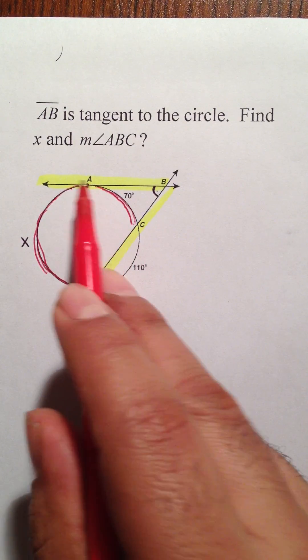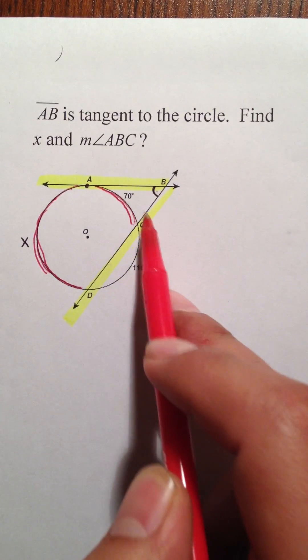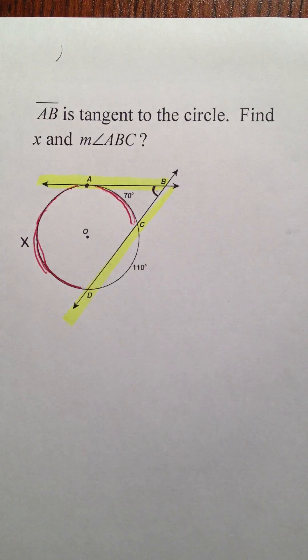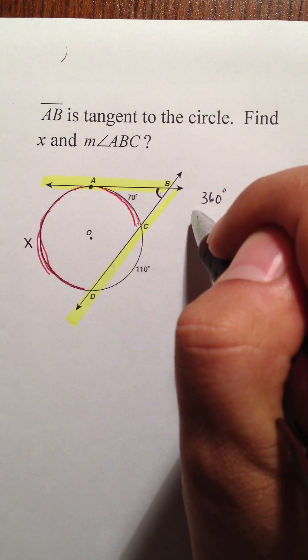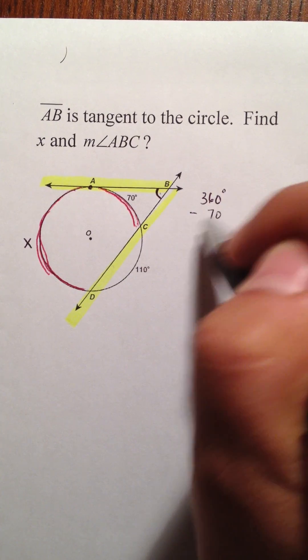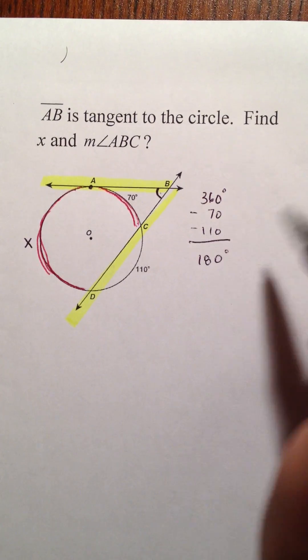Now, in a circle, what's nice is this creates 360 degrees. We already know 70. Here's another 110. So, what happens is we have a 360 degree circle. We know 70, so we're going to subtract it. We know 110, we're going to subtract that. And what's left over is 180.